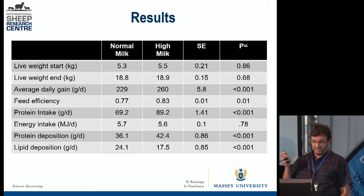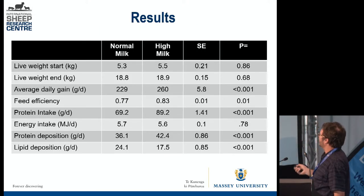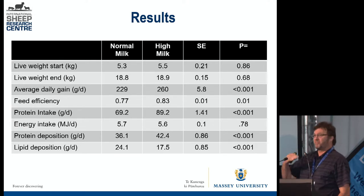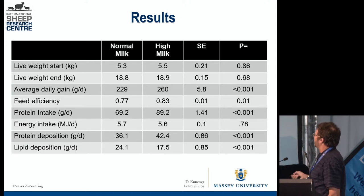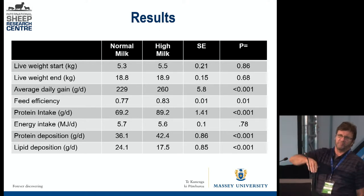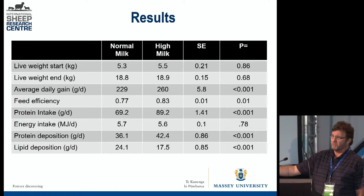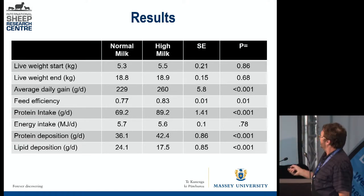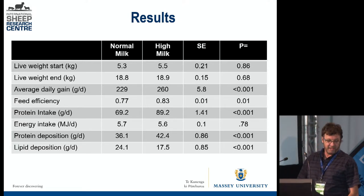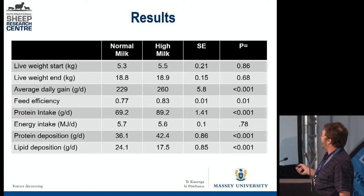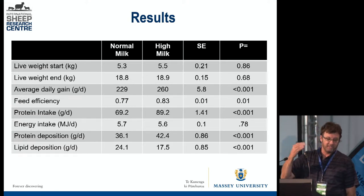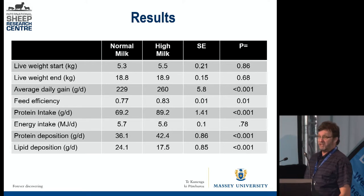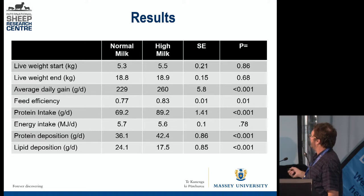So what we found in this experiment, where we had a normal milk replacer and a milk replacer with a higher protein-to-energy ratio: there was no difference in live weight at the beginning or end, as you'd expect — we slaughtered them all around 19 kg. But we thought the ones on the high protein-to-energy ratio milk grew about 30 grams faster a day. They were more efficient — they put more weight per kilo of dry matter intake than the ones on the normal milk. But there was a cost: as you had more protein in this milk, you were putting more protein into those animals. The cost of those types of milk is quite a bit more expensive.